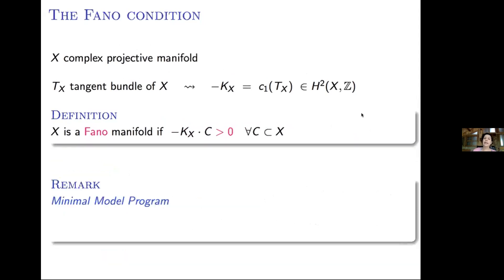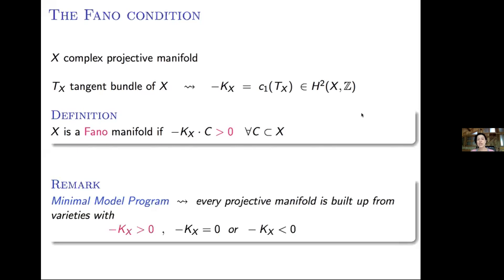Just a remark: in general the sign of the anticanonical class is not well defined, but after the minimal model program, what we know is that every projective manifold can be built up from varieties for which the sign of the canonical class is determined. So in particular, either it's a Fano manifold, or it has zero anticanonical class, or negative anticanonical class.